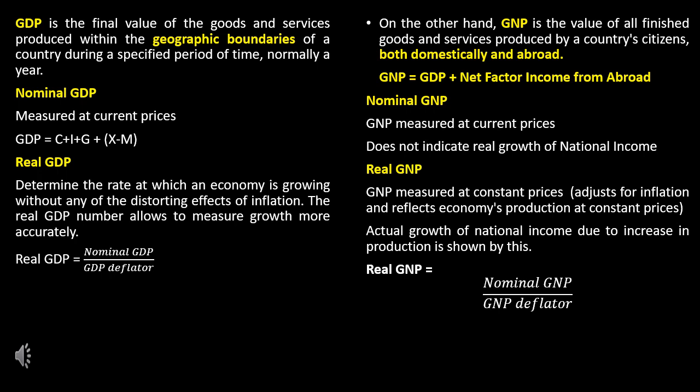Nominal GNP is GNP measured at current prices; it does not indicate real growth of national income. Real GNP is GNP measured at constant prices, adjusted for inflation, and reflects the economy's production at constant prices. Actual growth of national income due to increase in production is shown by real GNP. Real GNP is equal to Nominal GNP divided by the GDP deflator.